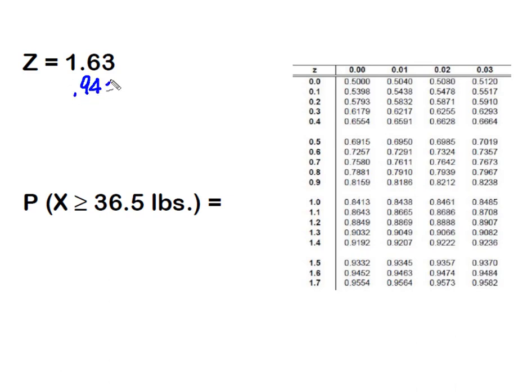But remember we wanted to solve for greater than. We know that this cumulative table always shows us the area below. So we have to take 1 minus our 0.9484 in order to get that area above 36 and a half pounds, and that turns out to be 0.0516.